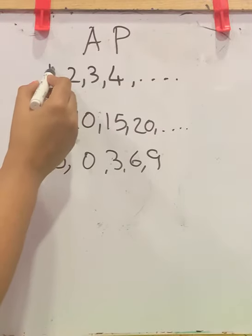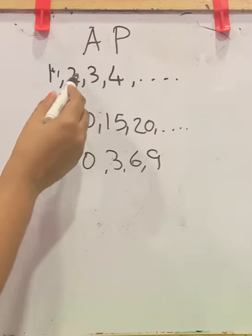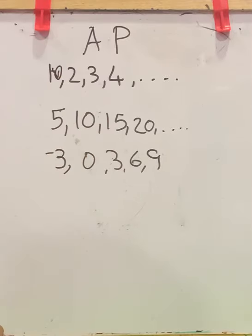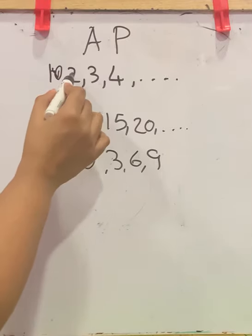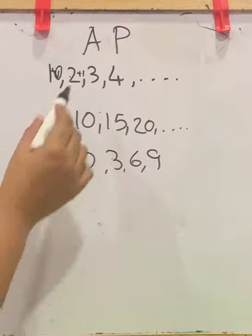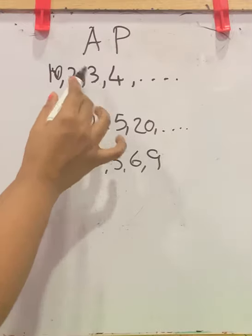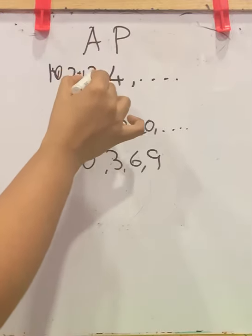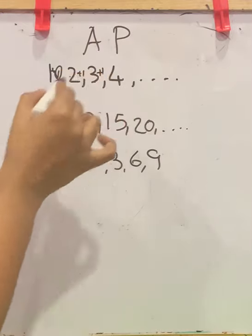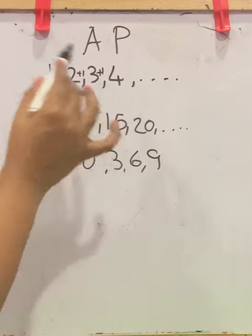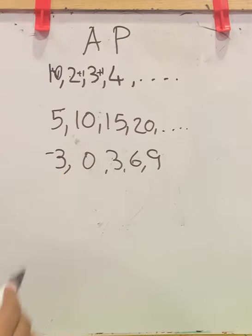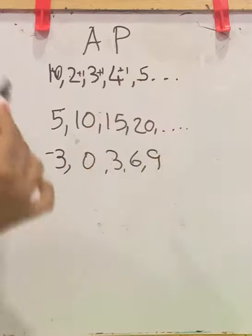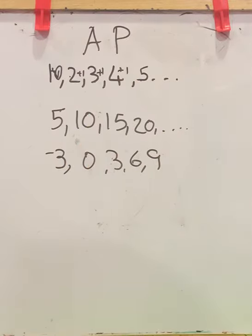Let us check here. 1 plus 1 is 2 — this is the fixed number. 2 plus that fixed number gives 3. Now 3 plus that fixed number, which is 1, gives 4. And the next number will be 4 plus 1 is 5. So here we can see a fixed number.